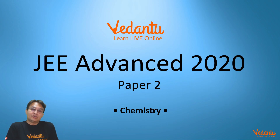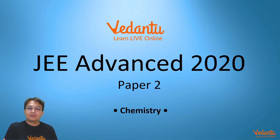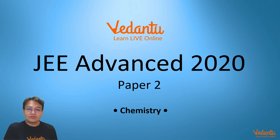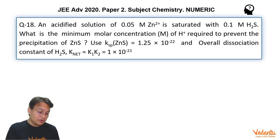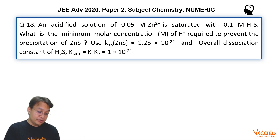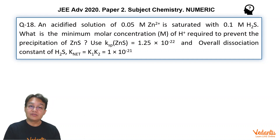Hello students, I am Pushkar, Master Teacher in Chemistry at Vedantu. I am discussing the JEE Advanced 2020 Chemistry paper. Let's solve a problem from Paper 2, question number 18. The problem is numeric and belongs to the chapter Ionic Equilibrium.